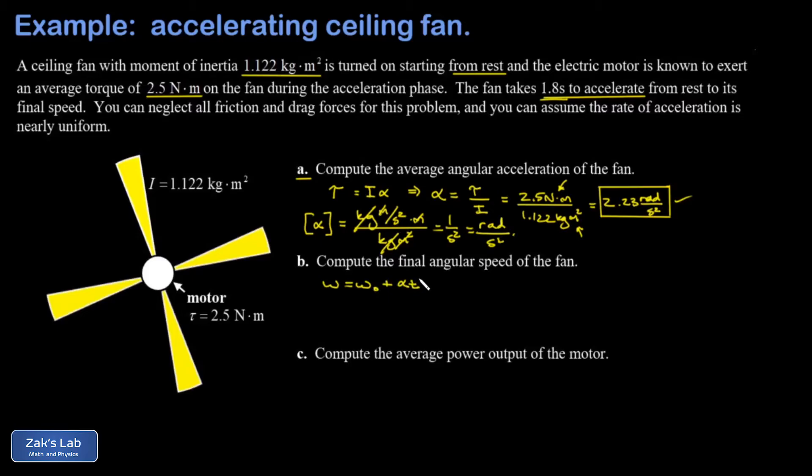It started from rest so omega naught is zero. Plug in alpha, 2.23 radians per second squared. Plug in t, 1.8 seconds. One factor of seconds cancels, which is good because I want radians per second. To three significant figures I get 4.01 radians per second.